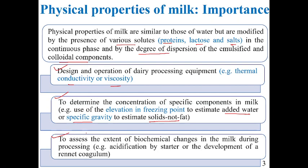Third, physical properties allow us to assess the extent of biochemical changes in milk during processing. For example, during cheese preparation there occur changes in pH and biological properties of milk. During cheese making, acidification by the starter culture occurs and rennet coagulum formation takes place, affecting the biological properties of milk, helping us arrive at the definite texture of the product.